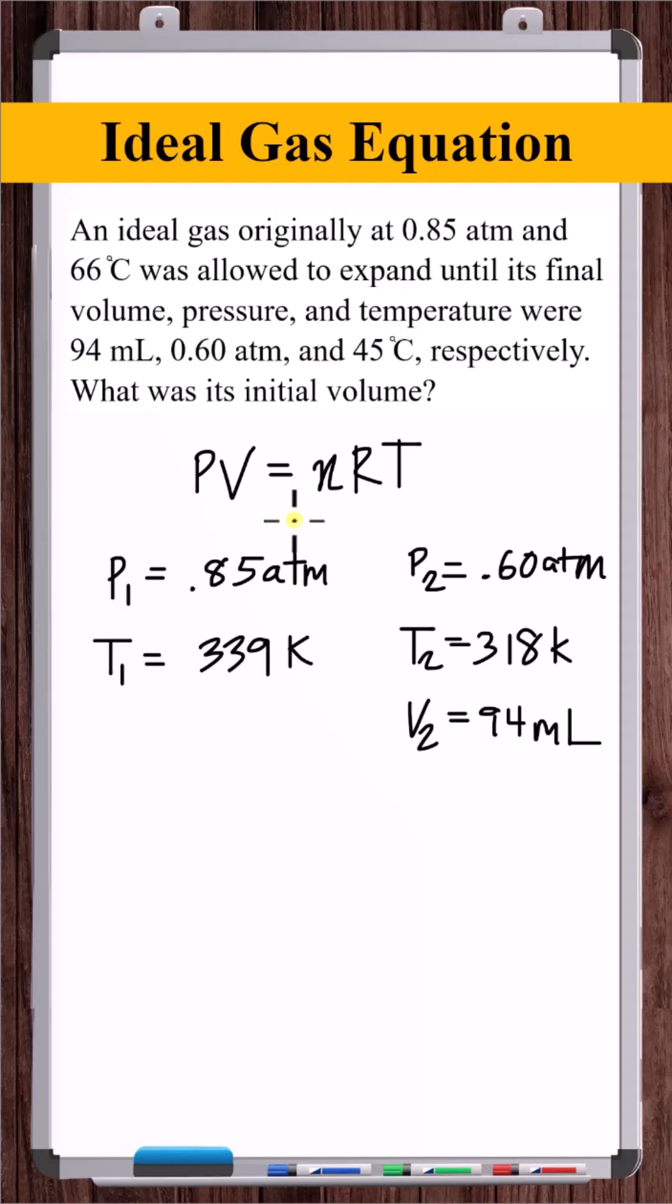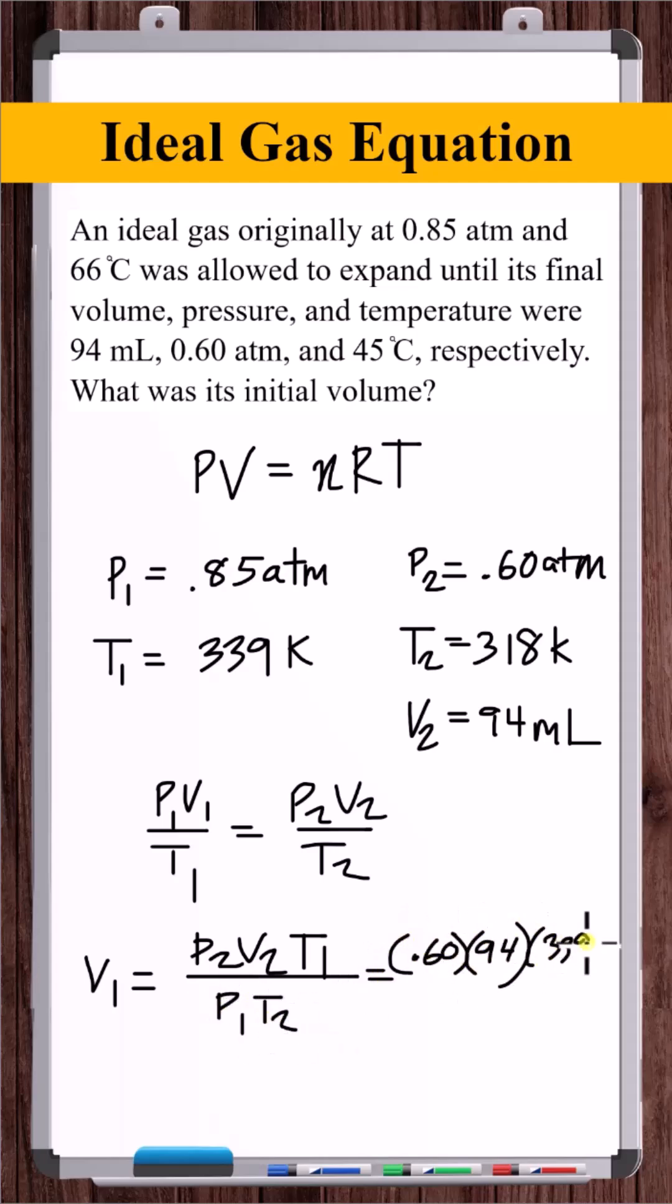In this process, the number of moles n remained constant. So PV divided by T was constant, meaning that P1V1 over T1 is equal to P2V2 over T2. Solving for V1, 70.7 milliliters.